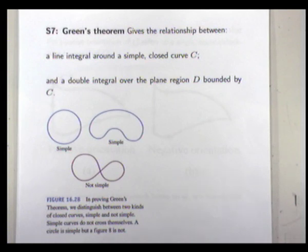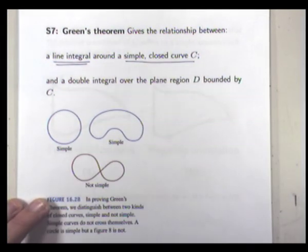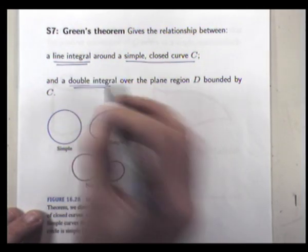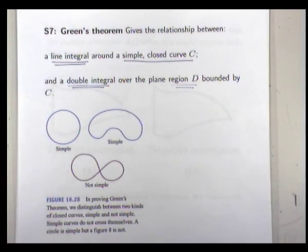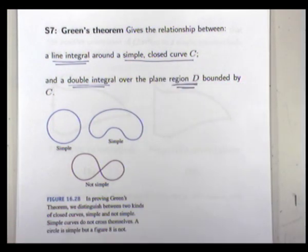So that's a little bit about the man, but what about the theorem? Well, basically, Green's theorem gives the relationship between a line integral around a simple closed curve and a double integral over a region D that sits in the plane. In particular, C is the boundary — it bounds the two-dimensional set D.